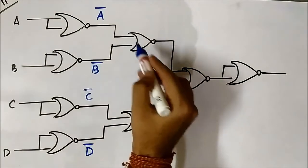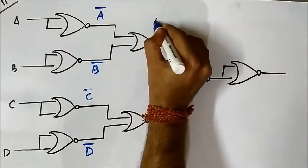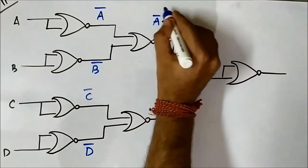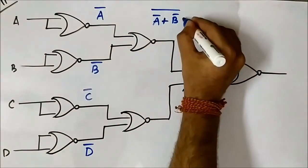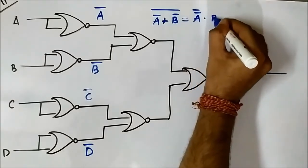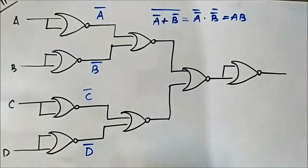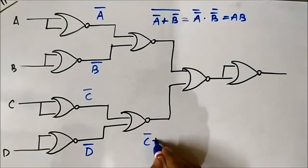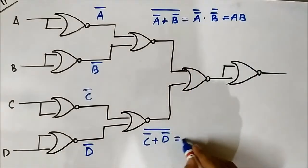In the second layer, the NOR gate receives A complement and B complement as inputs, giving (A complement OR B complement) whole complement. Applying De Morgan's theorem, this becomes A double complement · B double complement, which simplifies to A · B. Similarly, the other second-layer NOR gate receives C complement and D complement, and applying De Morgan's theorem gives C · D.